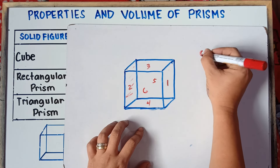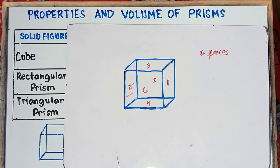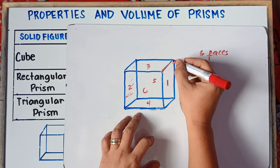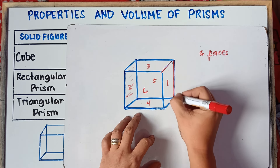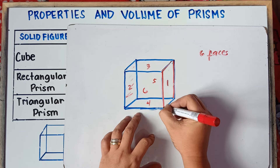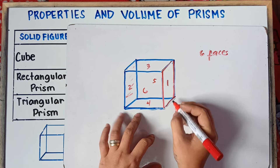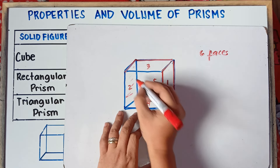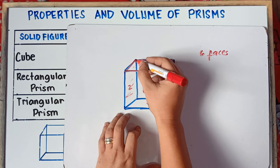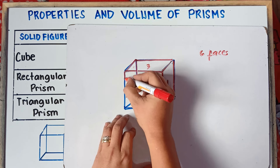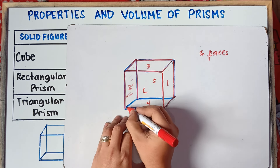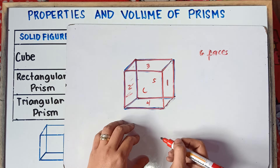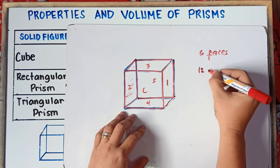So let's count the number of edges. Counting each edge: one, two, three, four, five, six, seven, eight, nine, ten, eleven, and twelve. So therefore, we have twelve edges.